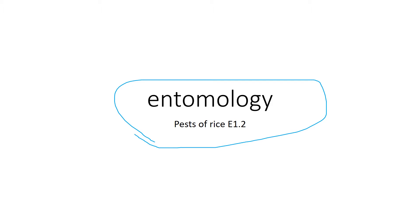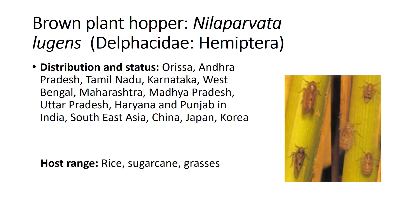Let's go to chapter number two, otherwise video number two — the continuation of pests of rice. The first pest today we're going to see is the Brown Plant Hopper, otherwise called as BPH.